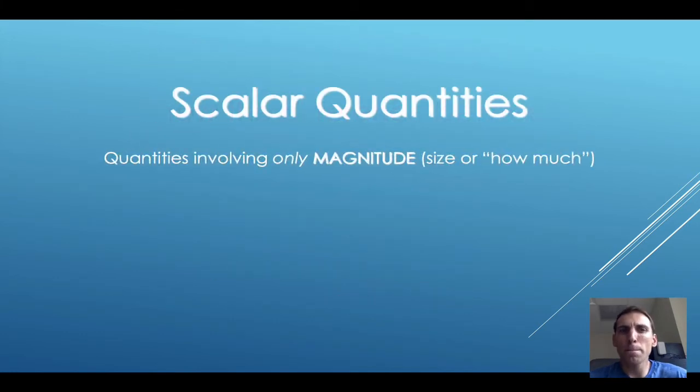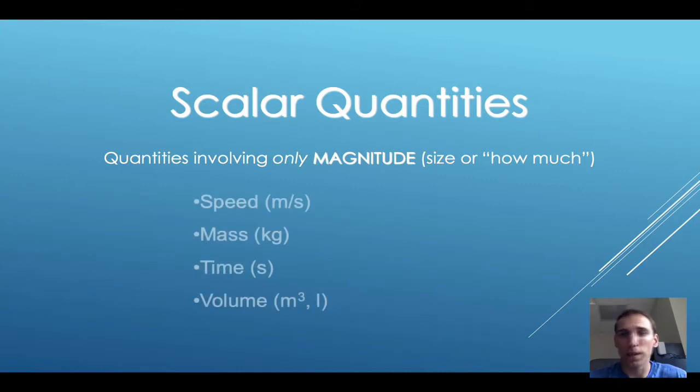Scalar quantities are measurements involving only magnitude. Magnitude means just how much. Examples of scalar quantities we'll use in physics are speed, mass, time, and volume.